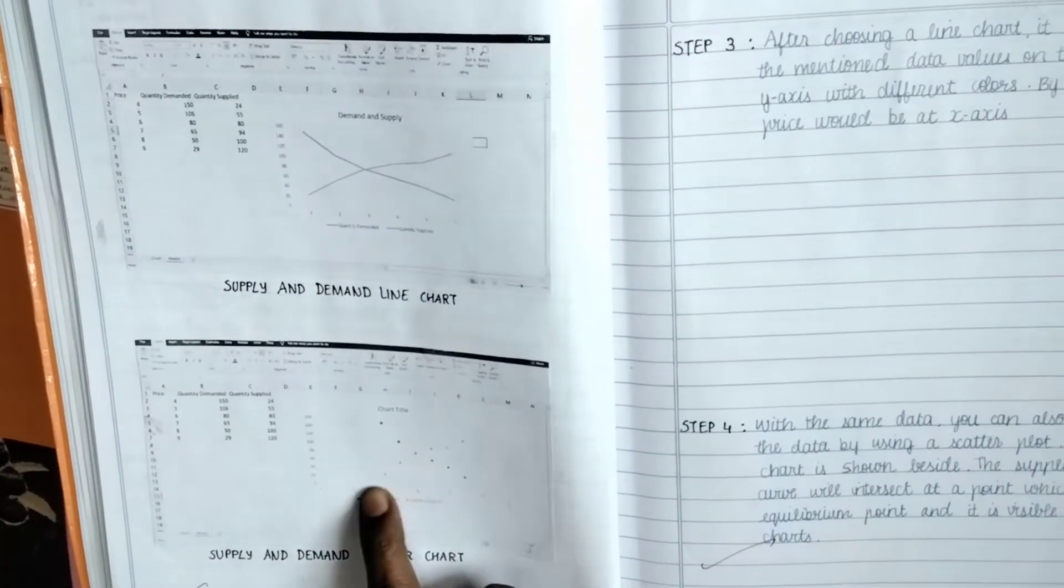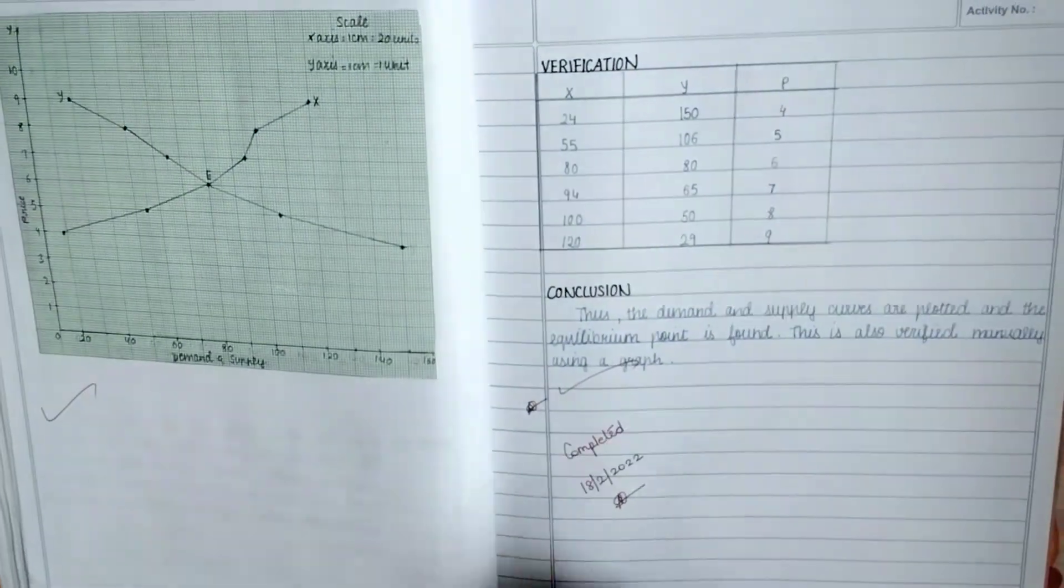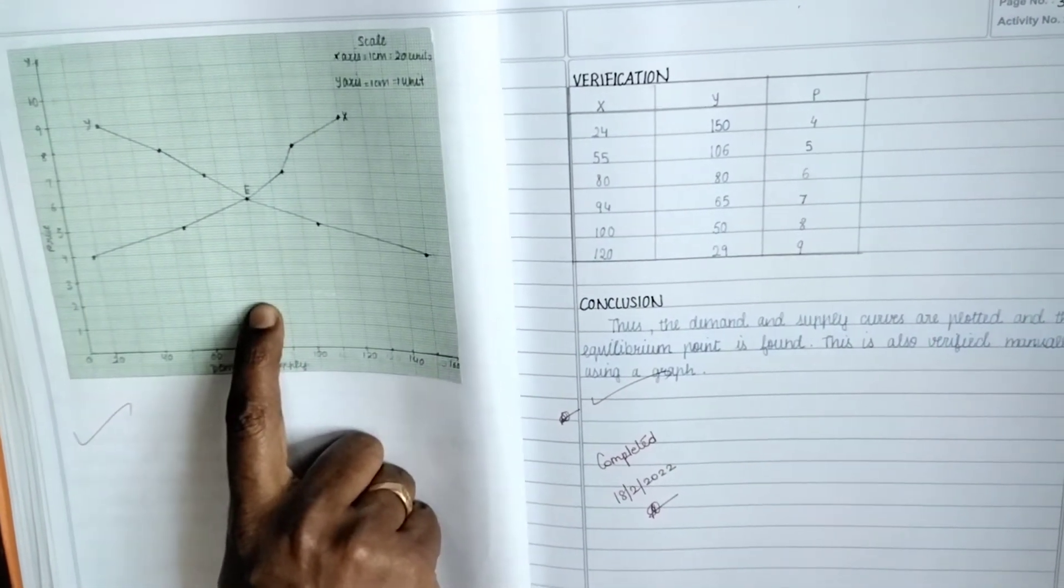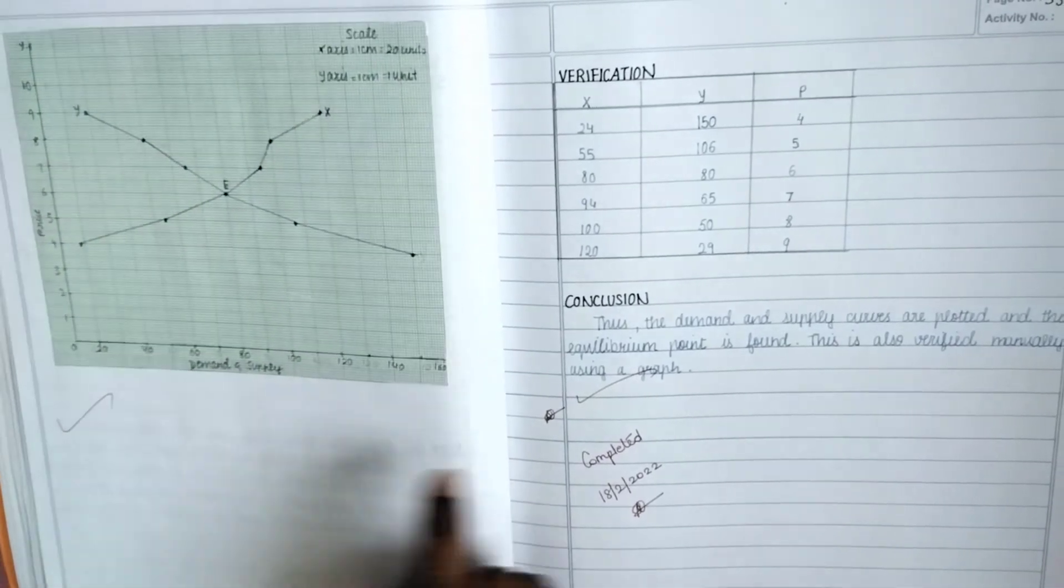Scatter chart, scatter diagram is also here. We completed this using manually, graphically also we did this. So this is the supply and the demand chart comes like this. That's the conclusion, the activity completed.